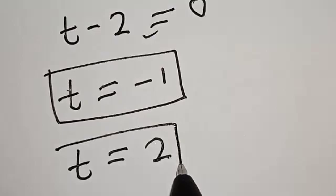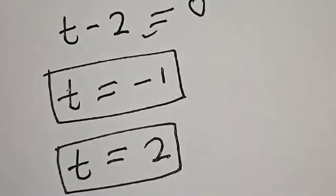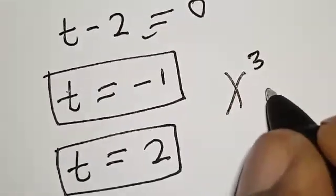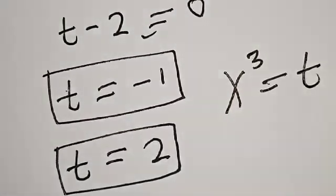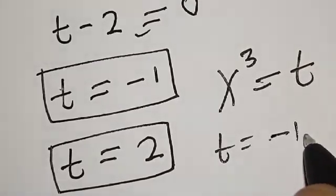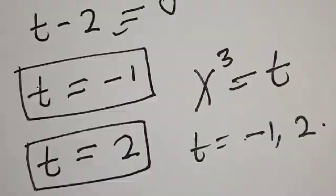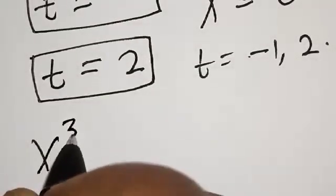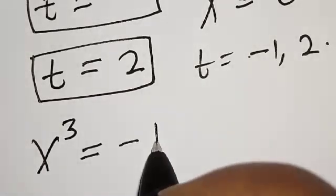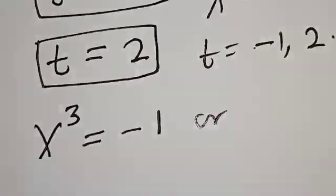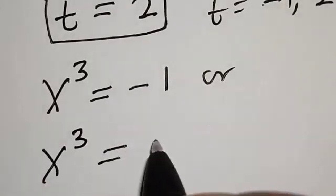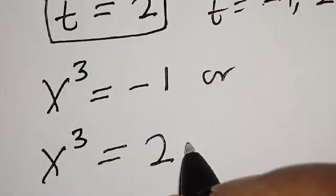Now t plus 1 equals 0 or t minus 2 equals 0, giving t equal to minus 1 or t equal to 2. Remember that we said s raised to power 3 is equal to t, and our t is equal to minus 1 and 2. Let's substitute: s raised to power 3 is equal to minus 1, or s raised to power 3 is equal to 2.